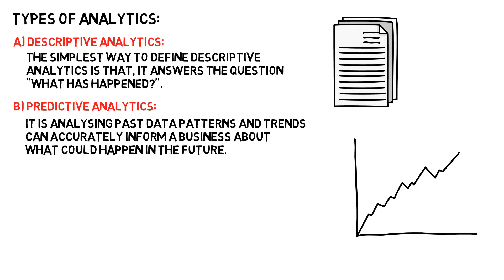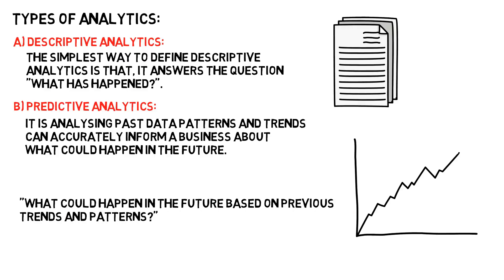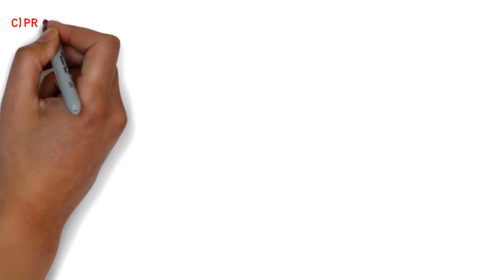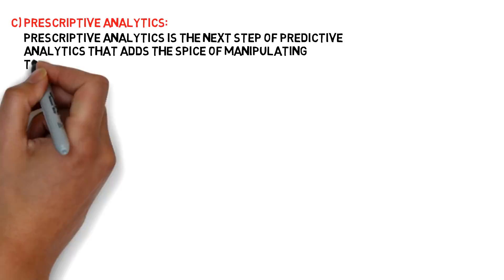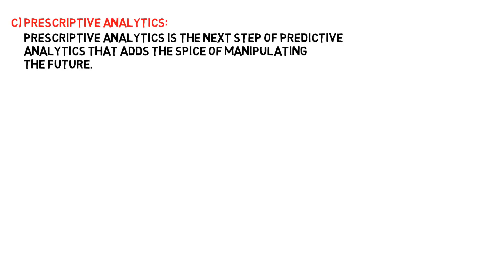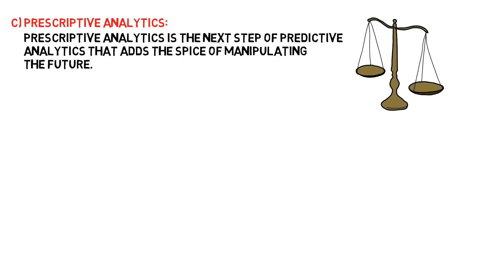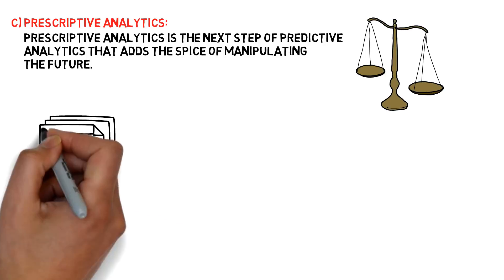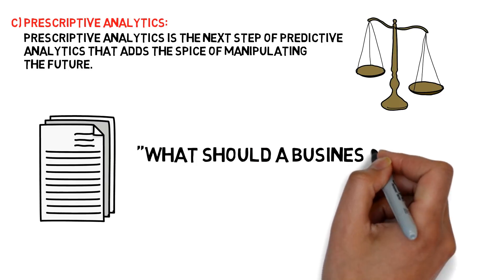Predictive analytics is used by businesses to study data and find answers to the question: what could happen in the future based on previous trends and patterns? Thirdly, prescriptive analytics — it is the next step of predictive analytics that adds the element of manipulating the future. Prescriptive analytics advises on possible outcomes and results in actions that are likely to maximize key business metrics. It basically uses simulation and optimization to ask: what should a business do?